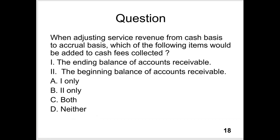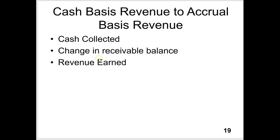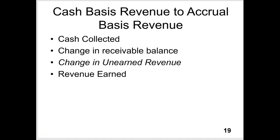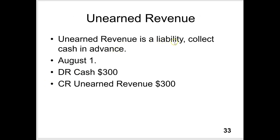The FAR exam considers this a basic question. So far we know: start with cash collected, look at the change in receivable balance, and you can determine revenue earned. But what makes it tougher is if they give you the unearned revenue account — beginning and ending balances. Unearned revenue is where you collect cash in advance; you get the money first and then earn it, just the opposite of accounts receivable. Unearned revenue is a liability that comes up when you collect cash in advance of services.